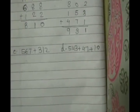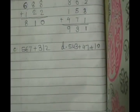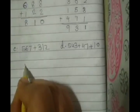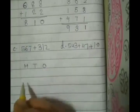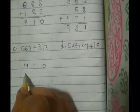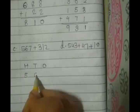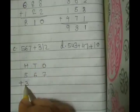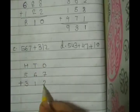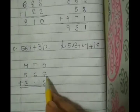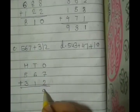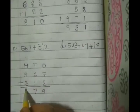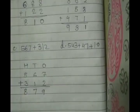Next, we are having 567 and 312. Write here hundreds, tens, ones. Now write the first given number that is 567 plus next number that is 312. Now add 7 plus 2, 9, 6 plus 1, 7, 5 plus 3, 8.